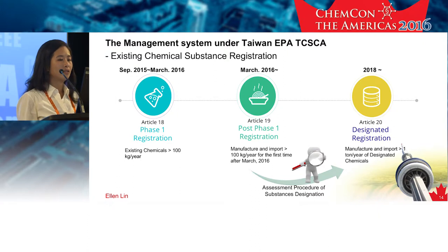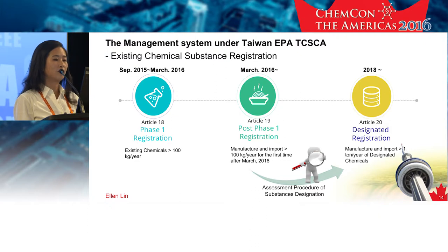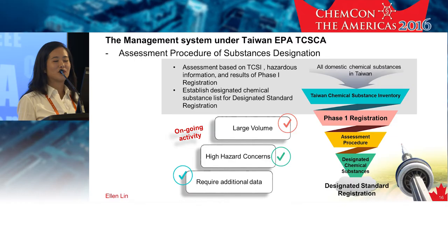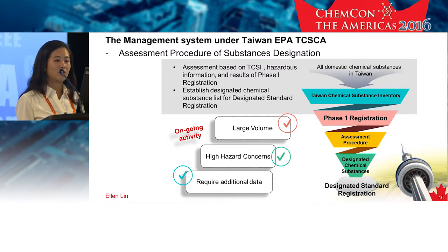The phase one period is now over. For those chemicals manufactured and imported over 100 kilograms per year for the first time after phase one, they have to be applied according to Article 19. We have compiled the data from phase one, and the task for EPA is to analyze the data and come up with a list of designated substances, setting three basic criteria and designing a science-based assessment procedure accordingly.